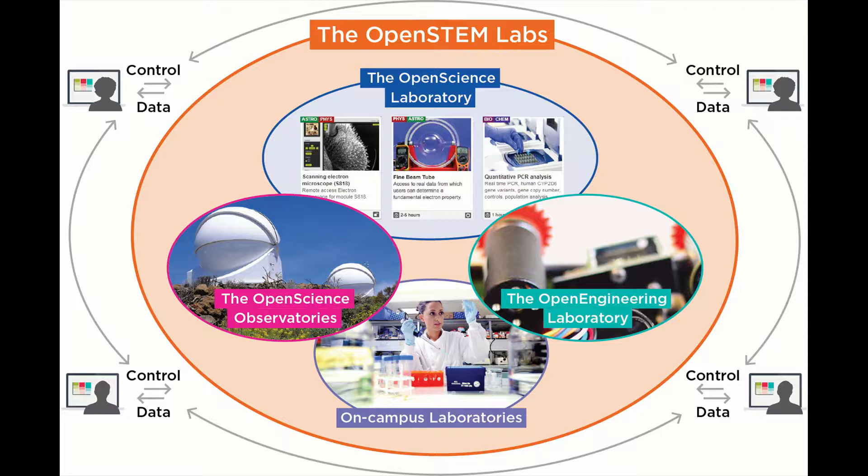NICK BRAITHWAITE: Within that virtual building, it's as if it were real — we've got different floors. One of them is the Open Science Laboratory, which was the first one we commissioned. Then we have the Open Science Observatories, the Open Engineering Laboratory, and on-campus labs. We've blurred the boundary, going seamlessly from the real world into the virtual world. Right now, on campus, we've got STEM students doing laboratory skills work in the on-campus labs, and we also have activities from the Open Engineering lab still accessible to students.